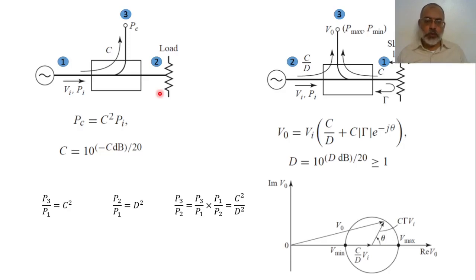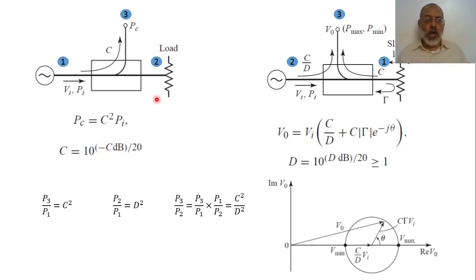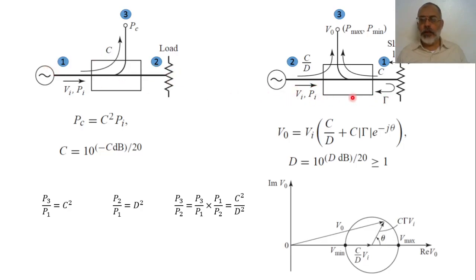Assuming the load has a small reflection — it is not completely matched — and this reflection is currently unknown, we have two unknowns: the directivity and the reflection coefficient of the load. This means that if we create two equations in these two unknowns, we can solve them. We are interested in the value of the directivity. To obtain it, we connect the directional coupler in reverse direction, with the input at port two and the load at port one.